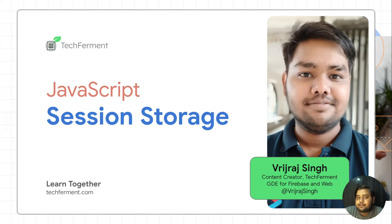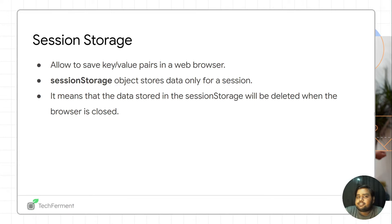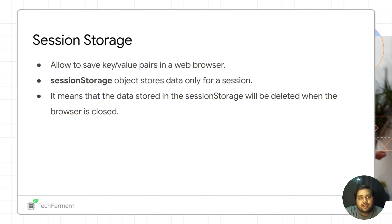Earlier in the previous video, I talked about local storage. With the help of local storage, you can store the data in the browser with no expiration date. But in session storage, it is a JavaScript object and a property of the Window object. You can store the data only for the session. For example, you have opened a web page and we have some data — you can store the data in session storage. And once the user closes the web page, your data will be destroyed.